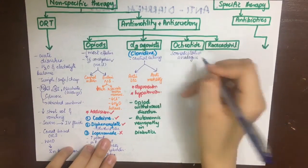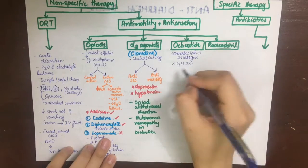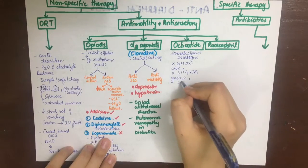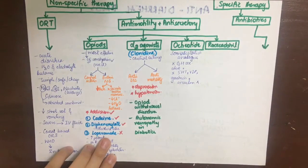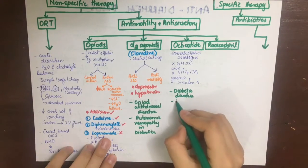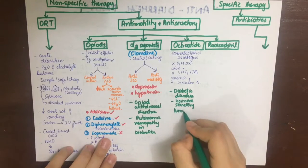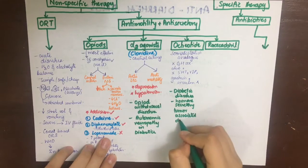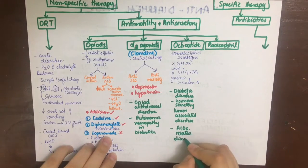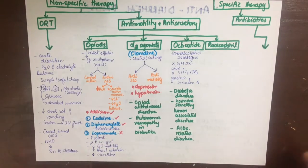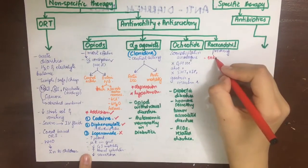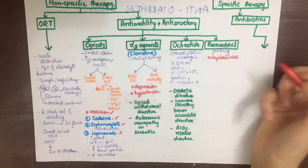The next drug is octreotide, which is a somatostatin analog. It inhibits growth hormone secretion, and relevant to our interest, it also inhibits the release of serotonin, vasoactive intestinal polypeptide, gastrin, insulin, etc. It can be used in diarrhea in diabetics and in hormone-secreting tumors that cause diarrhea — the secreting tumor might secrete serotonin acting on 5-HT4 receptors and causing associated diarrhea.